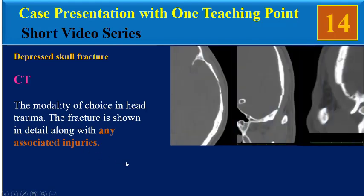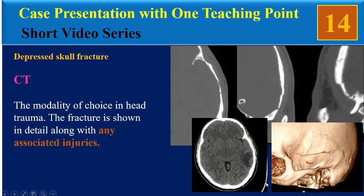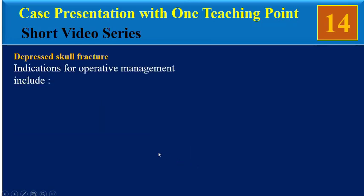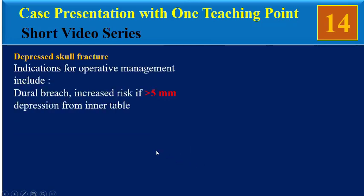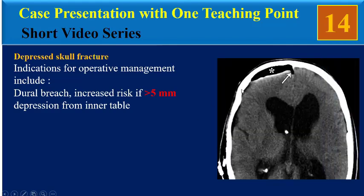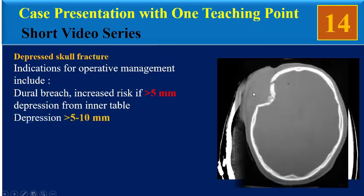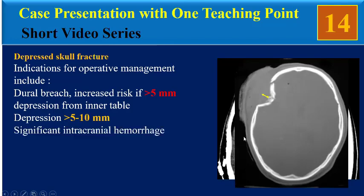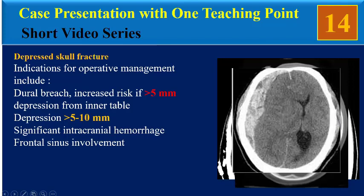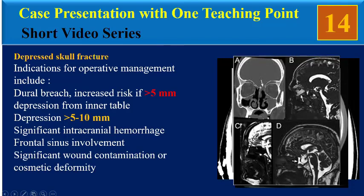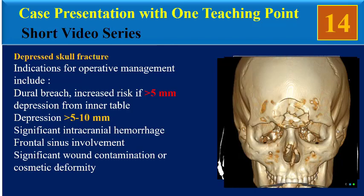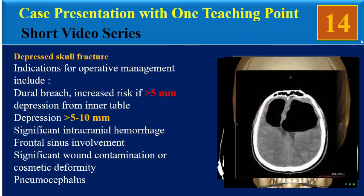CT is the modality of choice in head trauma. The fracture is shown in detail along with any associated injuries like brain contusion in our patient. Indications for operative management include dural breach, increased risk if more than 5 mm depression from inner table, depression of bone fragments more than 5 to 10 mm, significant intracranial hemorrhage, frontal sinus involvement, significant wound contamination, cosmetic deformity, and finally pneumocephalus.